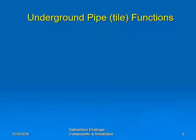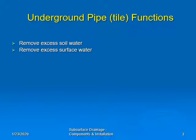As we learned previously, the functions performed by subsurface drainage systems and underground outlet systems are stated in the practice standards and include the following: removing excess soil water — this is the function of a subsurface drain and criteria are found in the 606 standard; removing excess surface water under the ground surface — this is the function of an underground outlet, with criteria found in the 620 standard; and conveying the collected water to a suitable outlet, a function both systems incorporate.